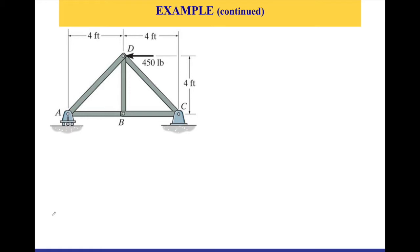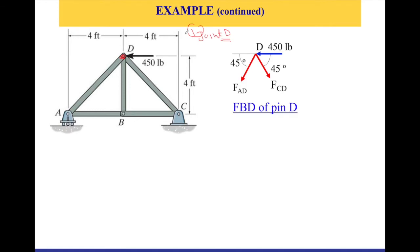The first step is to draw a free body diagram of the joint. Let's start with joint D. For this joint, we create a free body diagram. We have the 450-pound external force — that's the known force acting at the joint. I am going to assume forces going out of the joint, meaning I assume tension in the members, so the force is pulling away from the joint.